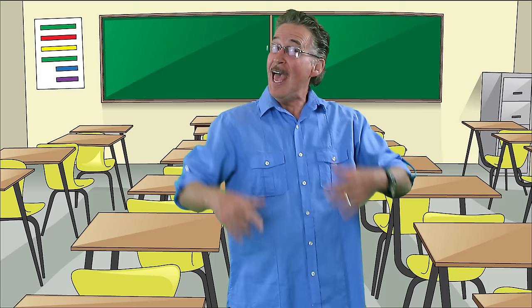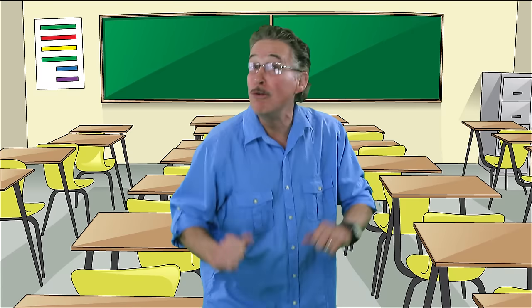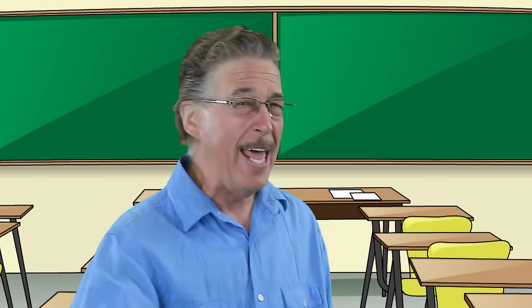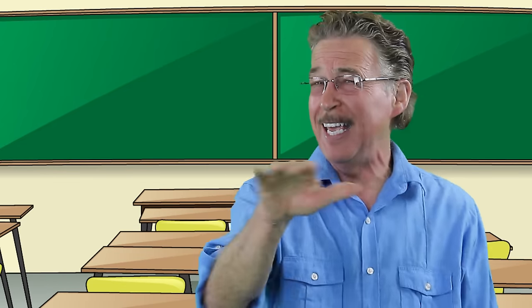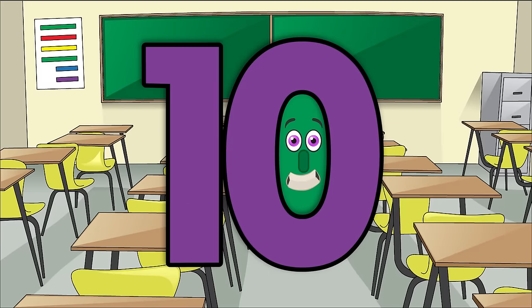To multiply by ten, you take the number then add a zero to the end. That's the end. Now say the answer before me.